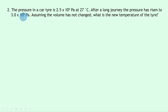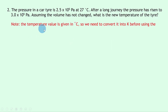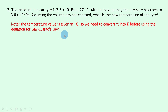Question 2 says that the pressure in a car tyre is 2.5 times 10 to the 5 pascals at 27 degrees Celsius. After a long journey, the pressure has risen to 3.0 times 10 to the 5 pascals. Assuming the volume has not changed, what is the new temperature of the tyre? Just like in question 1, the temperature value is given in degrees Celsius, so we need to convert it into Kelvin before using the equation for Gay-Lussac's law, meaning our answer T2 will also be in Kelvin.